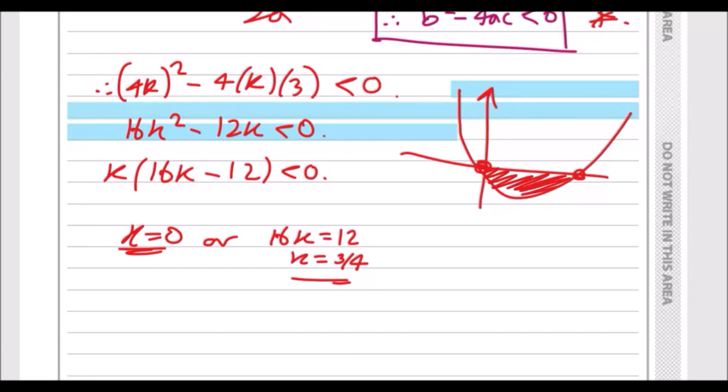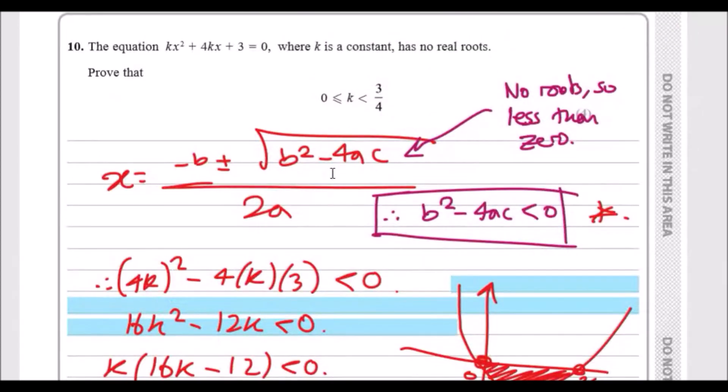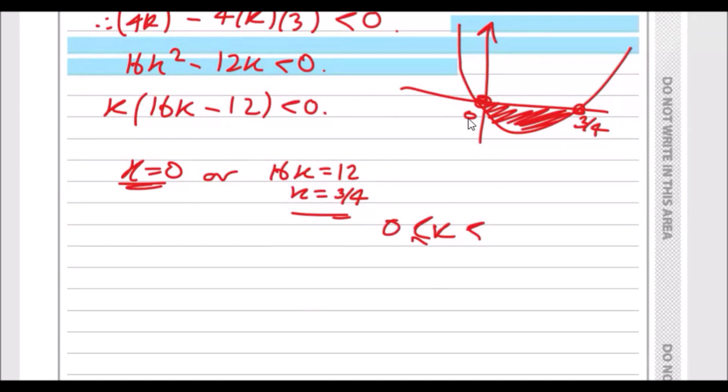The only time it's below zero is this region here, and we can see that one of the critical points is three quarters because that's what we got, and the other one is zero. So the answer will be between zero and three quarters, and that's it. Zero and three quarters - done.